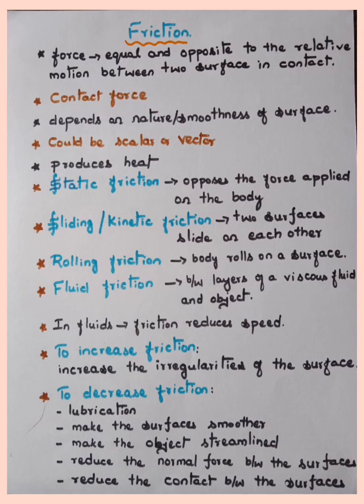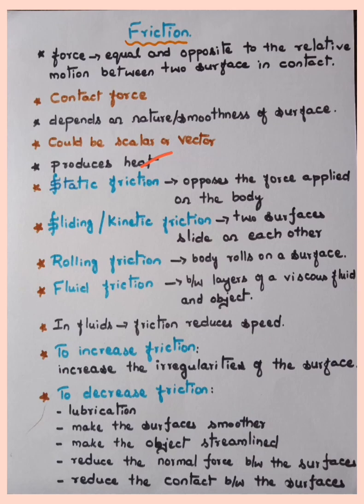Friction depends on the nature or smoothness of the surface — the smoother the surface, the less the friction. It can be a scalar or vector quantity, and substances produce heat when they undergo friction.